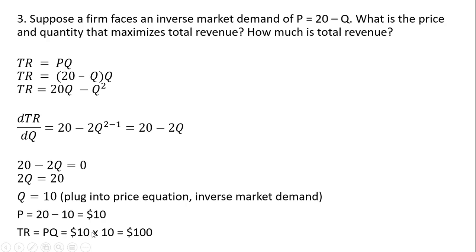For total revenue, we simply do price times quantity: price is 10, quantity is 10, so total revenue is $100. Or, like in the previous problem, we could take 10 units of output and plug it into the total revenue equation to also get $100.